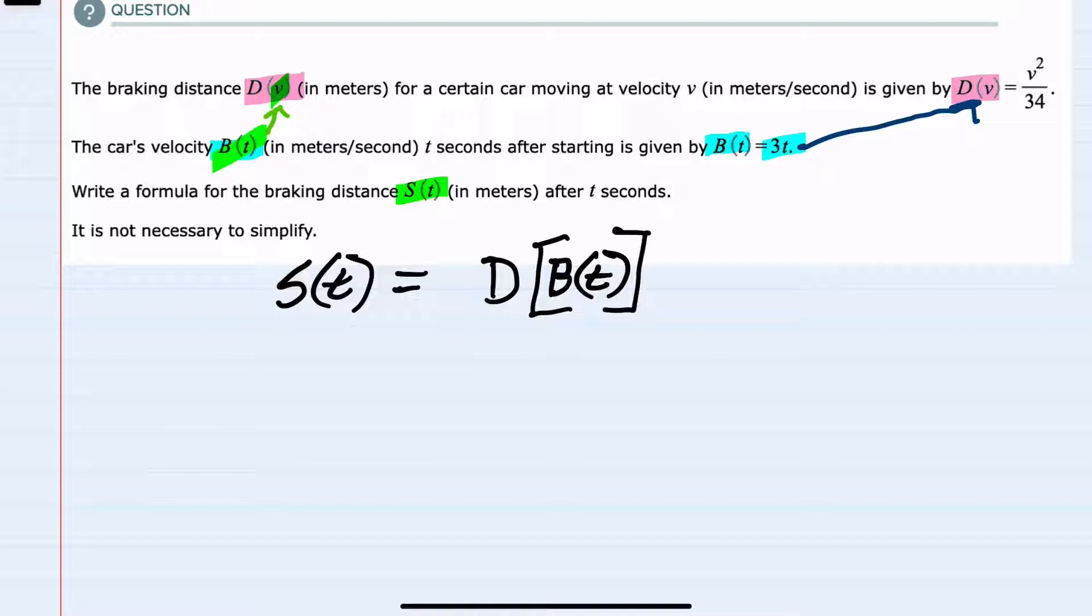then that means I would need to replace the v here with 3t. So essentially, this is d of 3t. We're plugging the 3t into the distance function, which means we're replacing v with 3t.